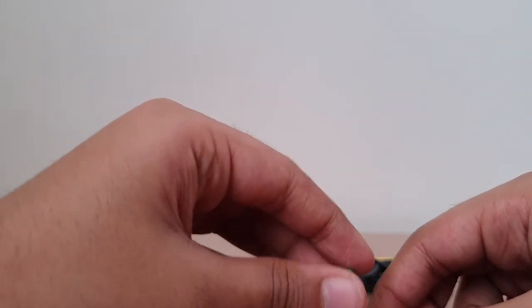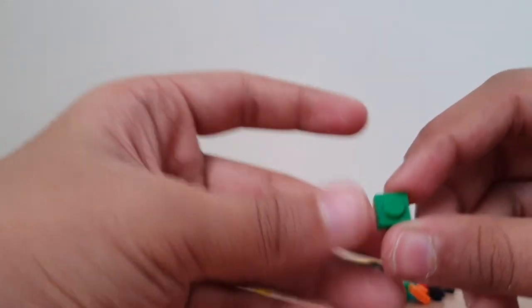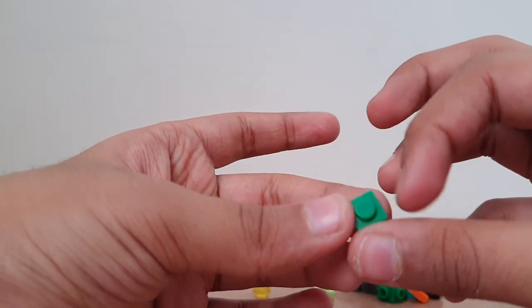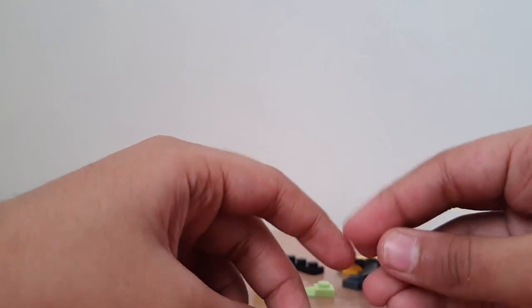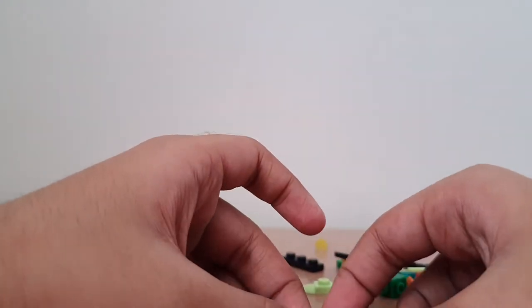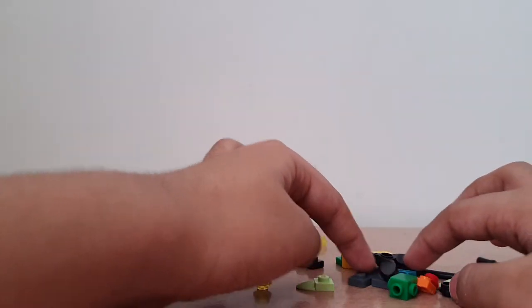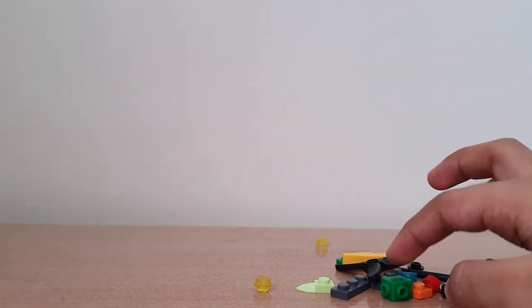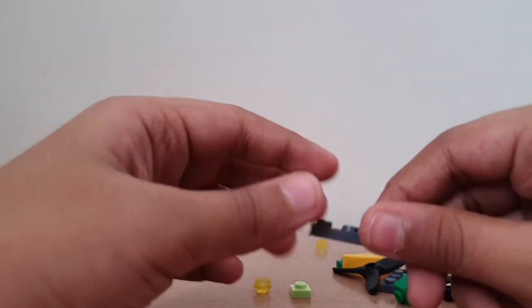And this 1x1 square-shaped plate has to be kept at the middle, right here. And the other one has to be kept at the top.